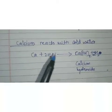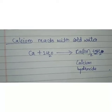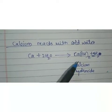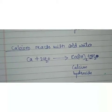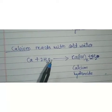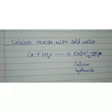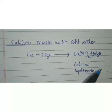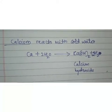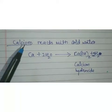In the same way, calcium reacts with cold water. When calcium reacts with water, the reaction is less violent compared to sodium. The heat evolved is not sufficient for the hydrogen to catch fire. Calcium reacts with water to produce calcium hydroxide and hydrogen gas. Calcium also starts to float because the bubbles of hydrogen gas stick to the surface of the metal. So calcium reacts with cold water.